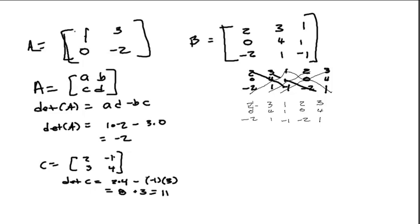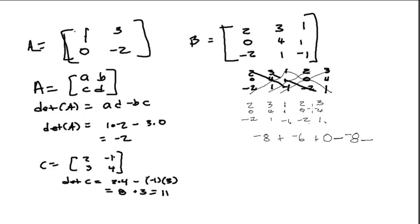So now I multiply these diagonals. 2 times 4 times -1 is -8. Then 3 times 1 times -2 is -6. Then 1 times 0 times 1 is 0. Then minus: 1 times 4 times -2 is -8, so minus -8. Then minus 2 times 1 times 1 is 2. Then minus 3 times 0 times -1 is 0. So the determinant is -8 plus -6 plus 0, minus -8, minus 2, minus 0, giving -14 plus 8 minus 2, which is -8.